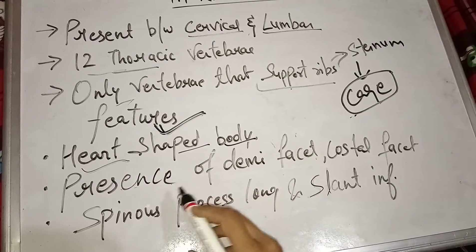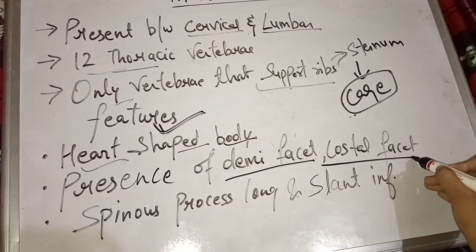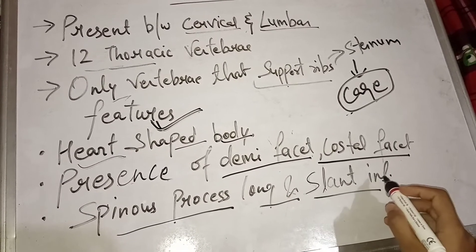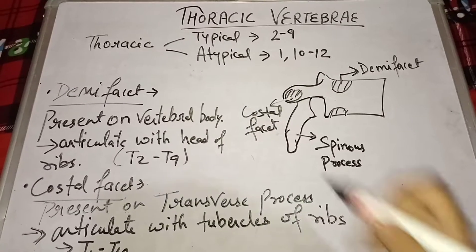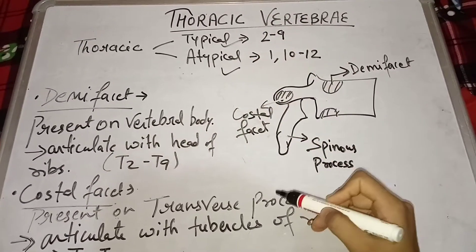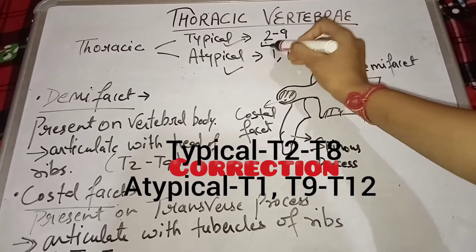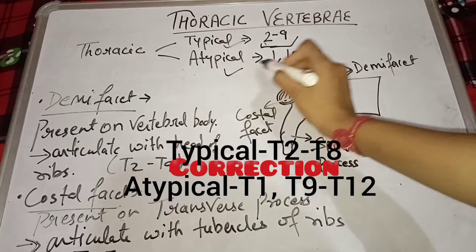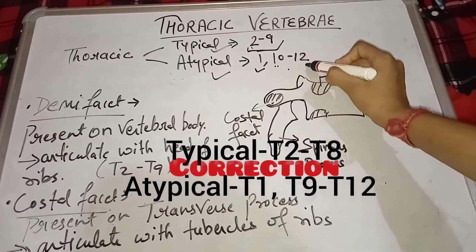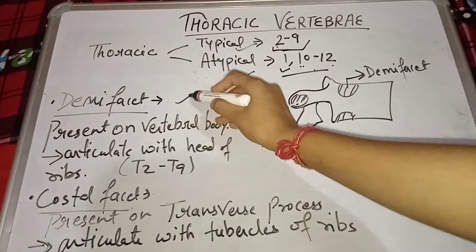It has a heart-shaped body and the presence of demi facet and costal facet. It has a spinous process which is long and slants inferiorly. Thoracic vertebra is divided into typical and atypical vertebra. The vertebrae ranging from T2 to T9 are typical vertebrae, and T1, T10, T11, and T12 are atypical vertebrae.